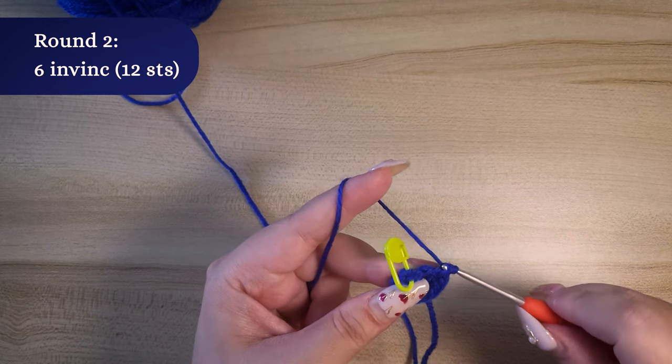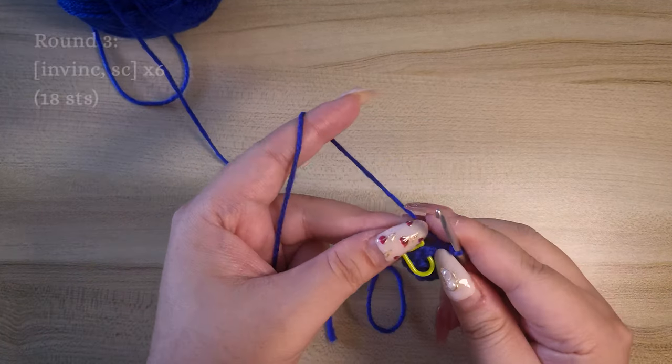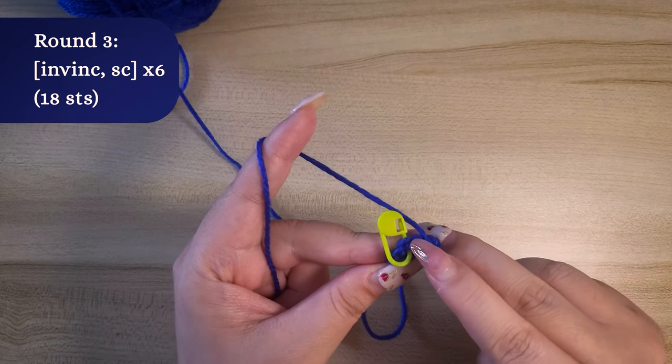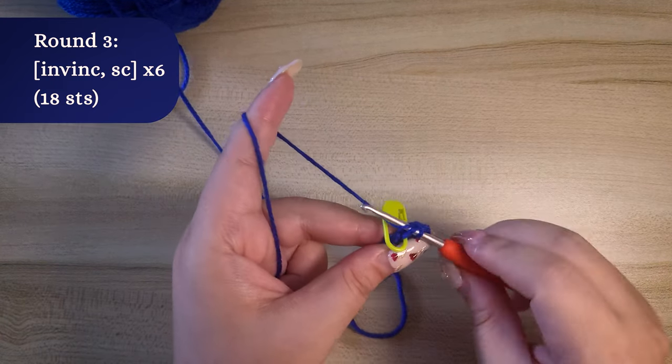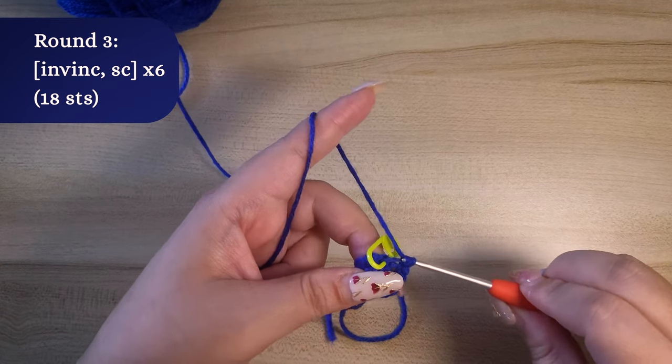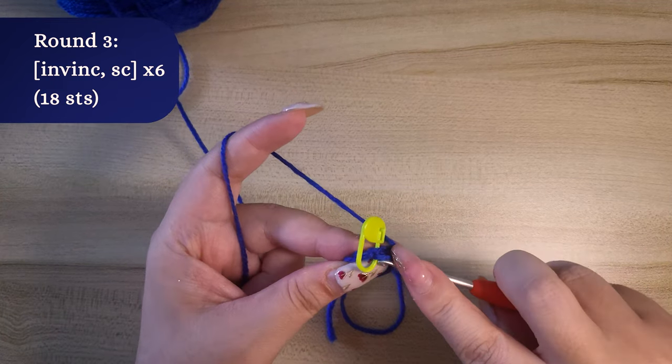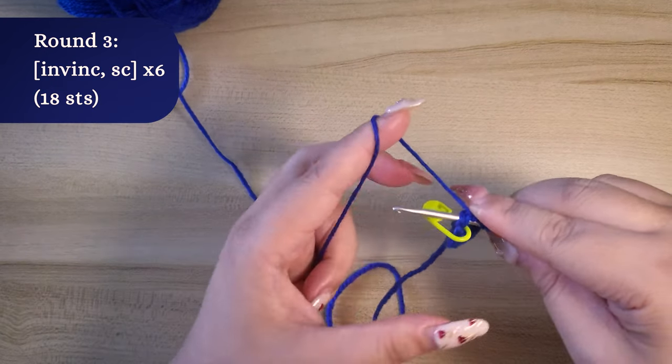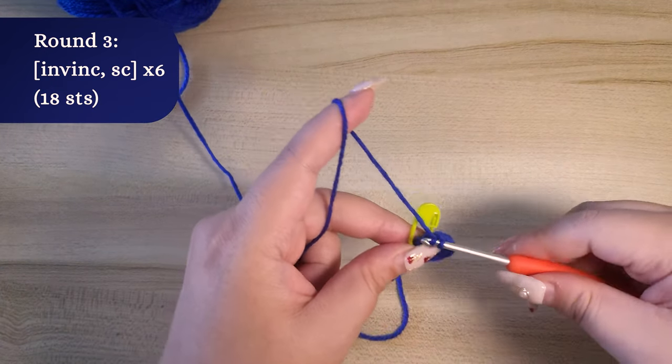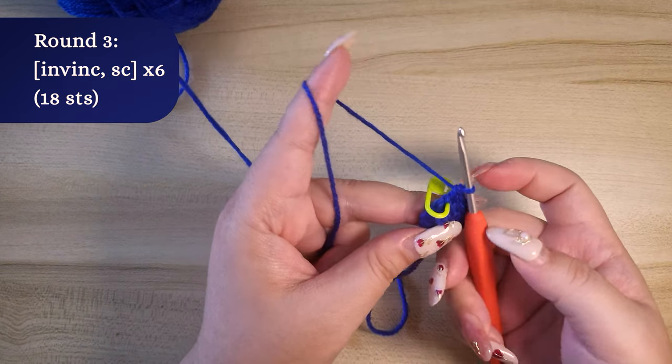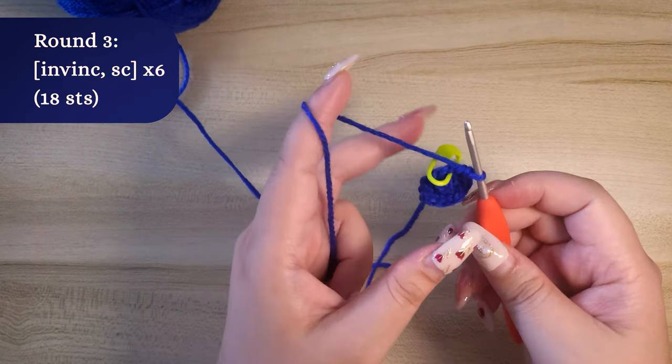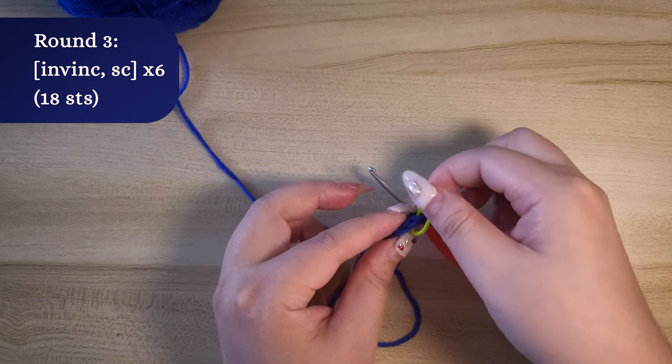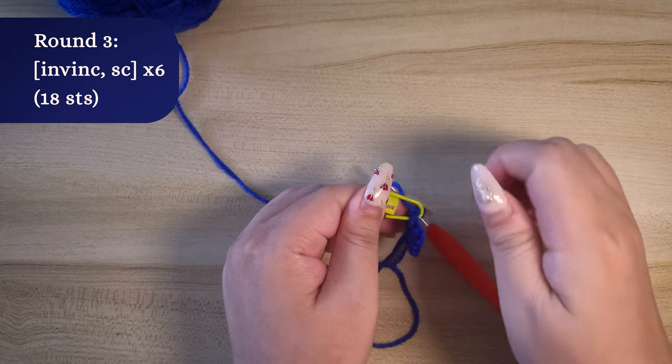That's the last invisible increase stitch of round two done. To do round three, we are going to work on the first stitch of round three by joining it to our first stitch of round two as marked by the stitch marker. Begin by doing one invisible increase. We can now take off the stitch marker that was marking the first stitch of round two and move that to our new first stitch in round three.